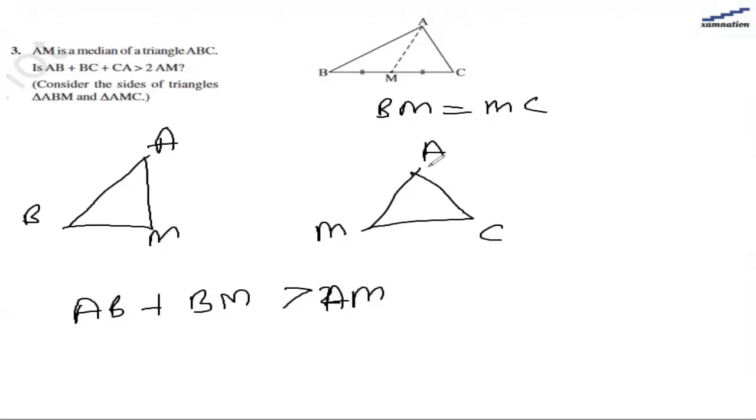Likewise, for the second triangle AMC, we have CA plus MC is greater than the third side, which is AM.